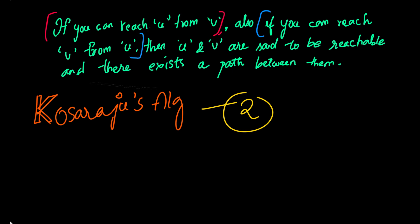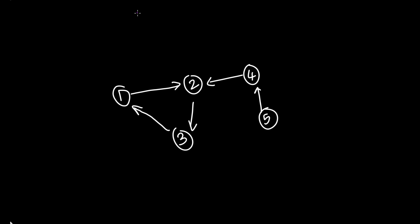Now, let us try to understand this algorithm using an example. We can see that there are three connected components in the graph. Now, let us try to devise this algorithm on this graph and see how it works.